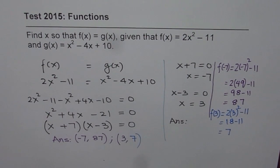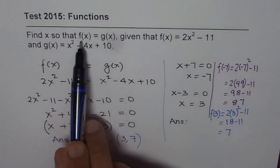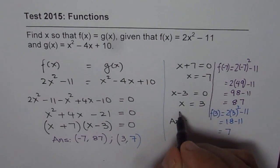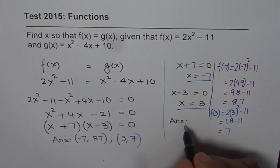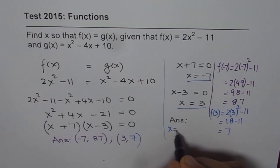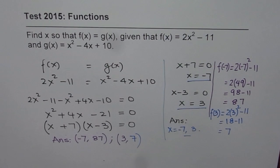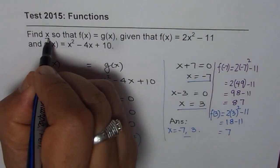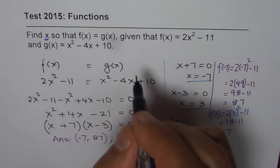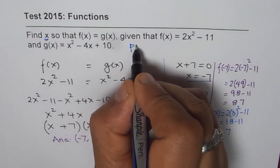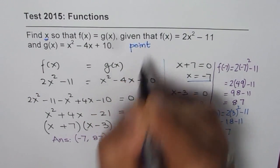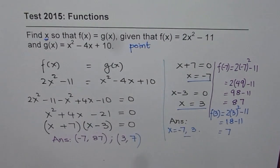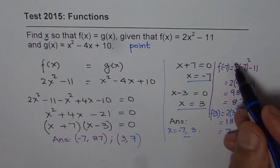So we have these two points where the functions will intersect. But the question was only find x, so the x values which we got were correct, and we can write the x values are x equals minus 7 or 3. I just did this in case we change this question from find x to find coordinate points. In that case, you have to do this part.